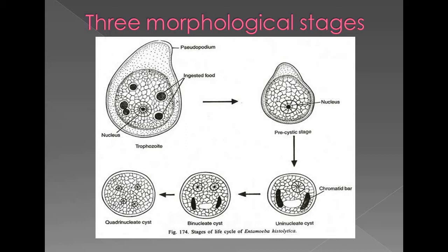Entamoeba histolytica occurs in three morphological forms: trophozoite, pre-cyst, and cyst. The trophozoite is the actively feeding and growing phase. The cyst is a dormant stage occurring during unfavorable conditions. The trophozoite has two cytoplasmic components — ectoplasm (outer) and endoplasm (inner condensed granular). It is motile by pseudopodia, has a single nucleus, and food vacuoles.